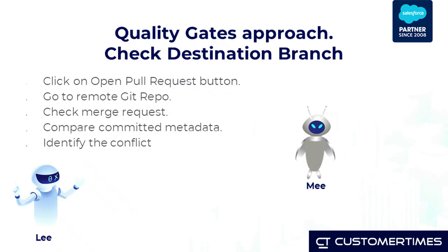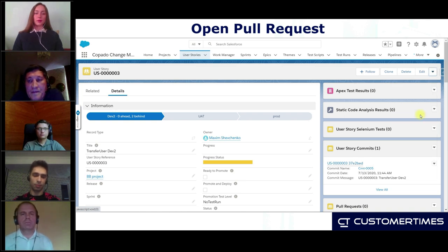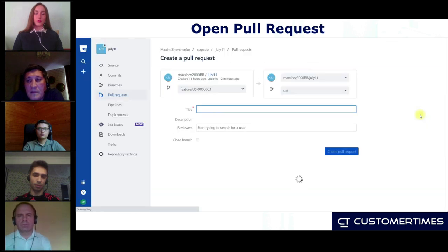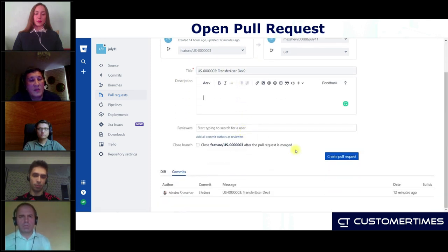The second step is to open pull requests. What we have now is a feature branch linked to our user story, and we are going to deploy our metadata to the next environment. We take the feature branch and merge it to the promotion branch. The promotion branch is originated from the org branch of the next environment, so we are going to check if there are going to be any problems. For that, we click on the Open Pull Request button.